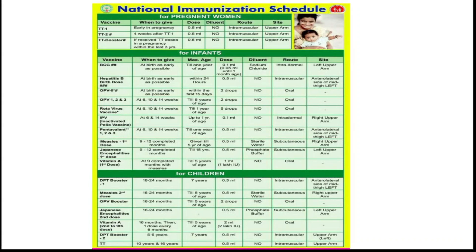Hepatitis B birth dose is given at birth, as early as possible, and must be given within 24 hours of birth. The dose is 0.5 ml, there is no diluent, the route is intramuscular, and the site is the anterolateral aspect of the left mid-thigh.